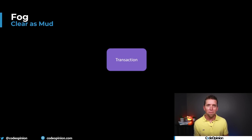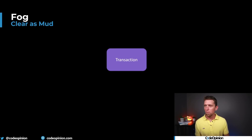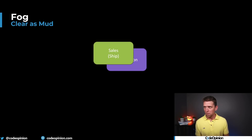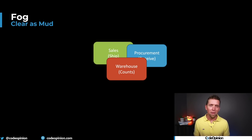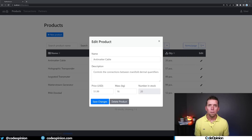It's kind of like a Venn diagram where we have this transaction concept, but really we have sales, procurement, and warehouse — they're all going to have a little bit of overlap and similarities, but that doesn't mean they're exactly the same thing. And you'll likely get into CRUD — a lot of CRUD — where a lot of the ideas and workflows are just in the end users' heads, but you're not explicitly capturing what they're trying to do.